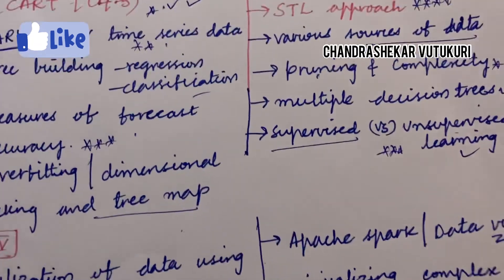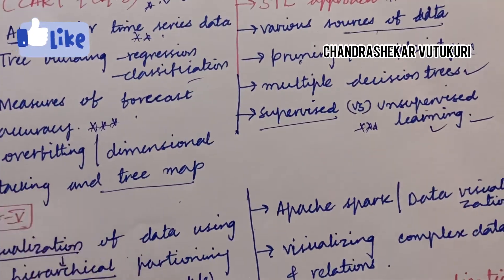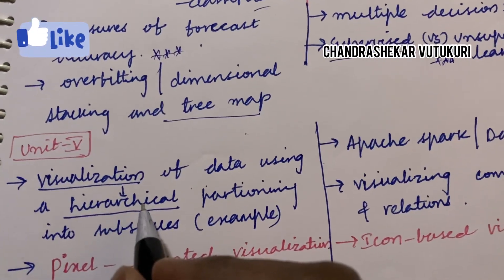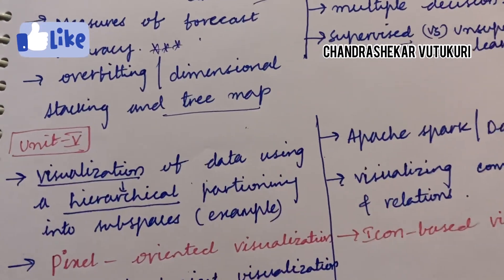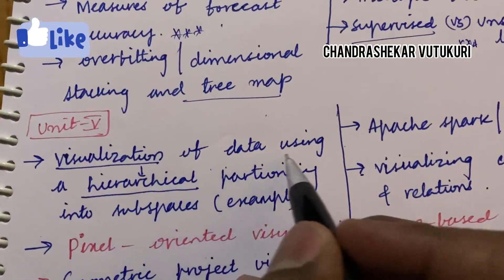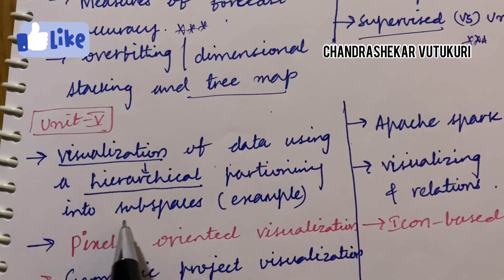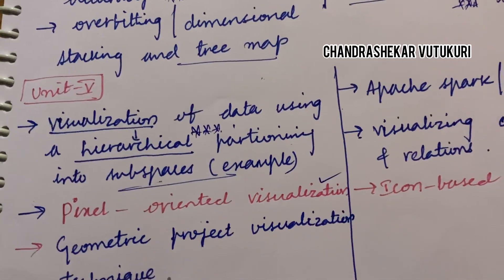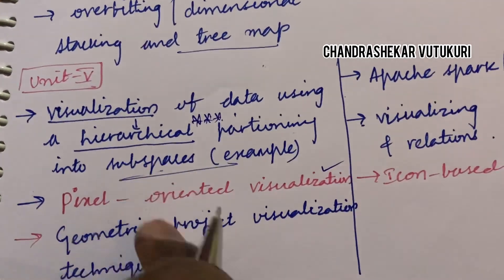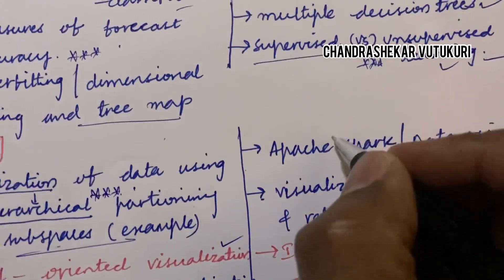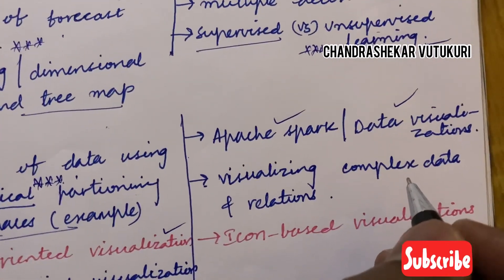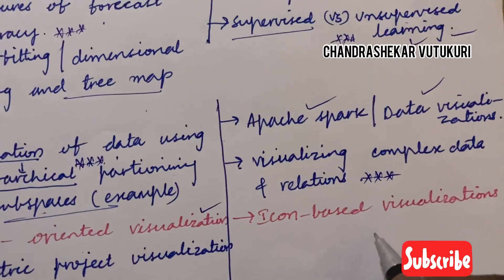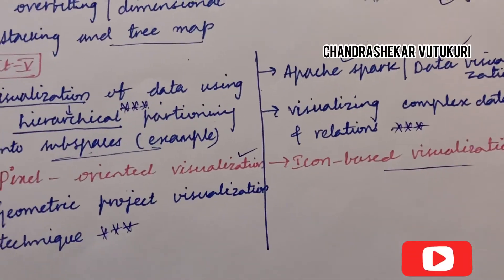This analysis has been done by taking into consideration earlier question papers from courses like Computer Networks, Web Technologies, and Web Programming. The majority of questions were covered from my videos. Visualization of data using hierarchical subspaces is said to be a very important question, related to hierarchy visualization, pixel-oriented visualization, and geometry projection visualization techniques — you are going to get one of these techniques for sure. Apache Spark is a two-mark question. Data visualization — define the term and explain — may be a two-mark question. Utilizing complex data and relations is a top most question. Icon-based visualization are also very important short questions.